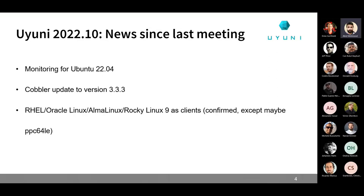We'll be on par with what we had in 2022.04. We'll also be presenting Cobbler 3.3 integrated in Uyuni. Documentation and client tools are already ready for RHEL and clones for all architectures, with the only remaining one being PowerPC, where we have some problems in the build service. That will be mostly postponed to the next version of Uyuni, which will be 2022.11.